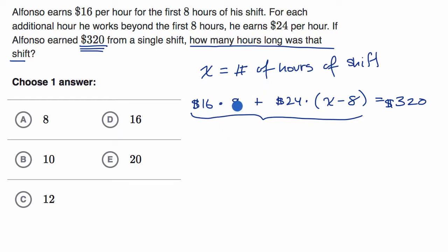So 16 times eight, you can use a calculator for that, but you might be able to do it in your head. Eight times six is 48 plus eight times 10 is 80. So that is 128 plus, now we can distribute this 24, 24 times X and then minus 24 times eight.